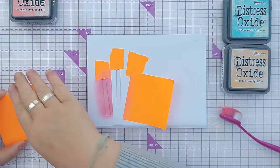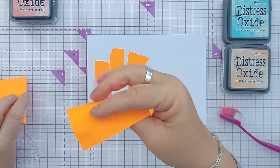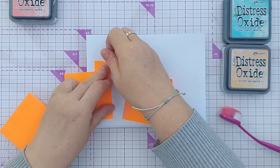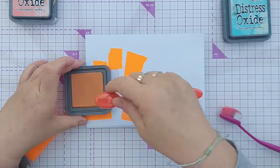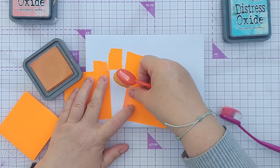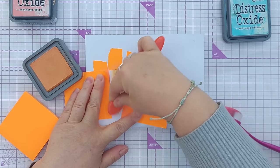Next I'm going to mask off this candle and this candle, and I'm going to color this one with dried marigold.